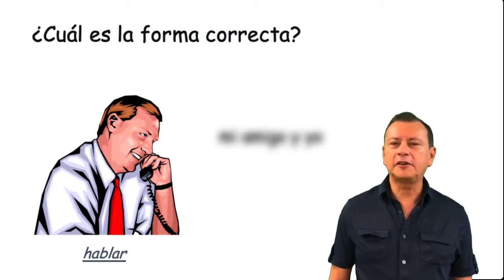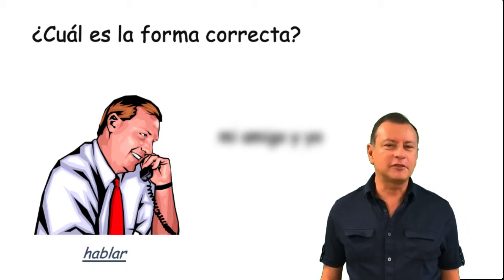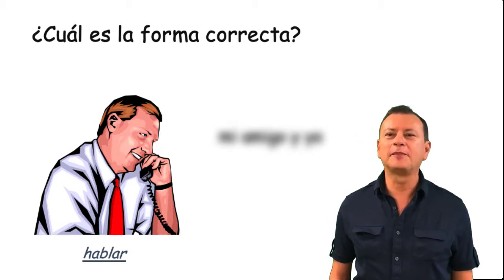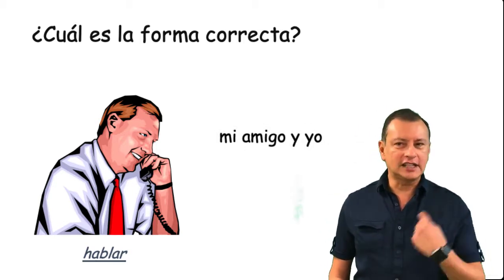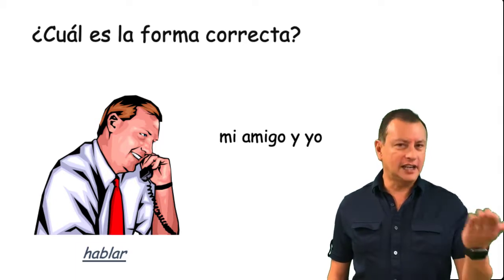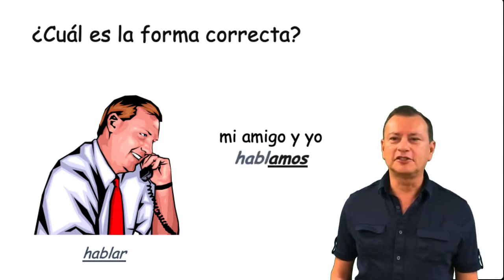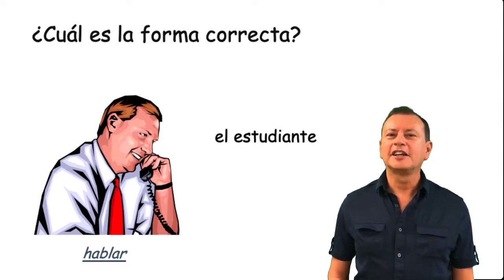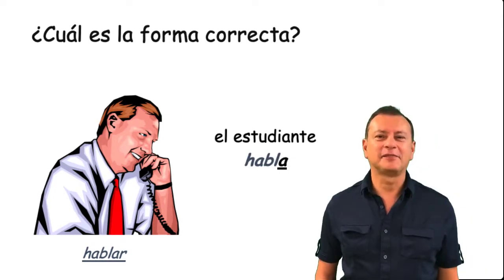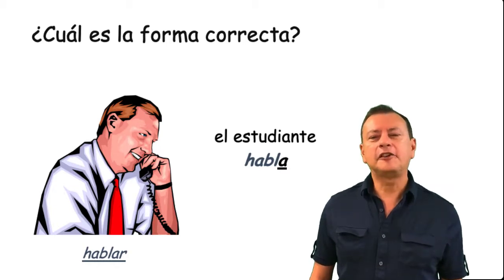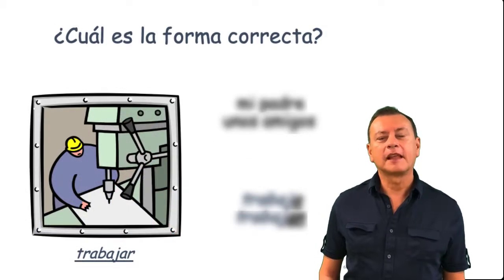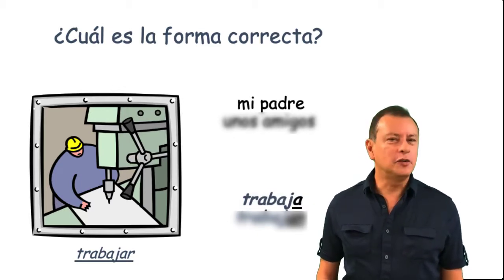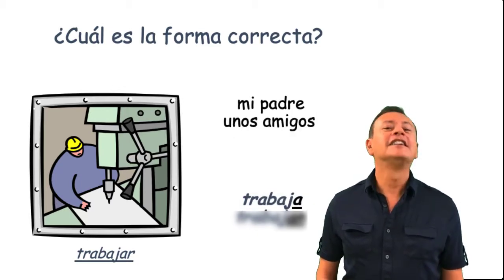What is the correct form? I give you hablar and a subject — can you conjugate the verb? Mi amigo y yo — that's us — the answer is hablamos. El estudiante — good job — habla in this case. For trabajar: mi padre — trabaja. Unos amigos — trabajan. Excellent.